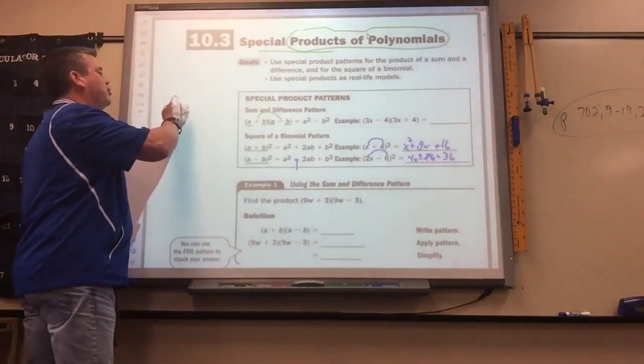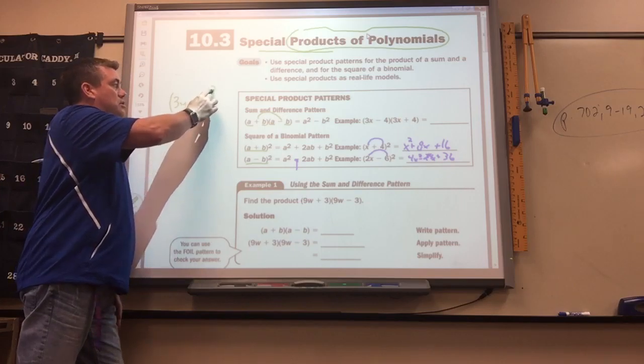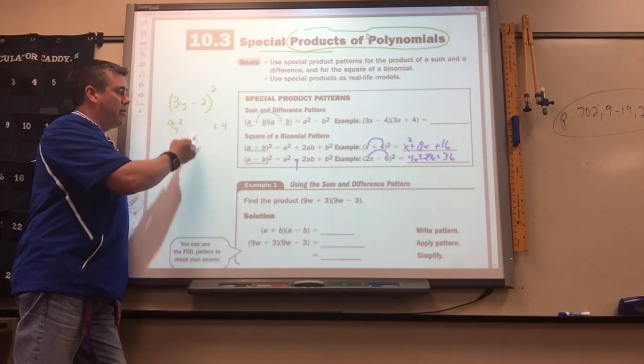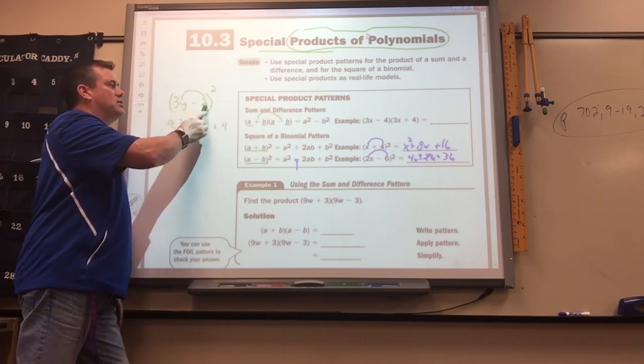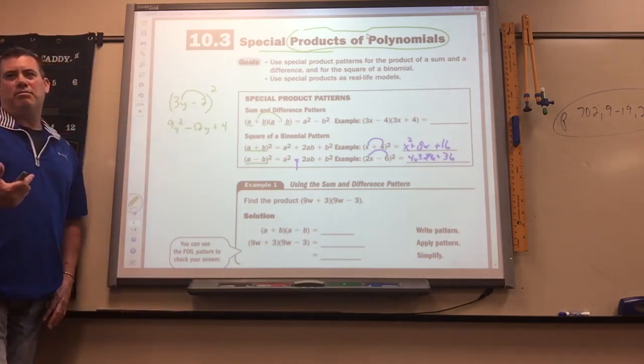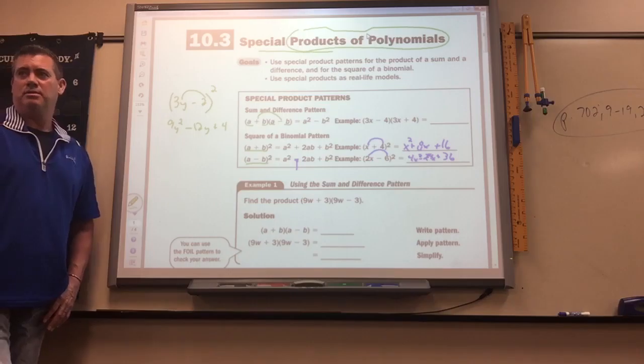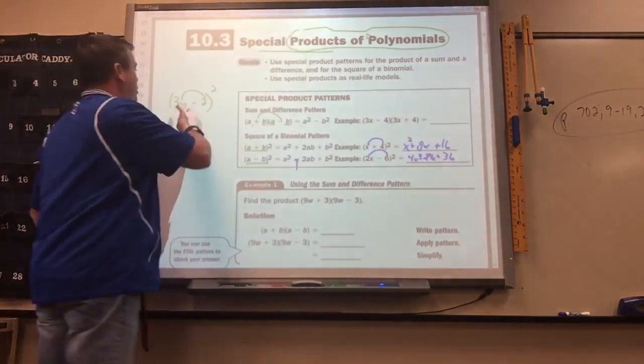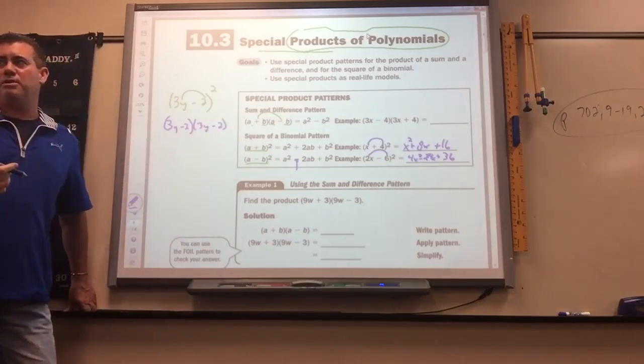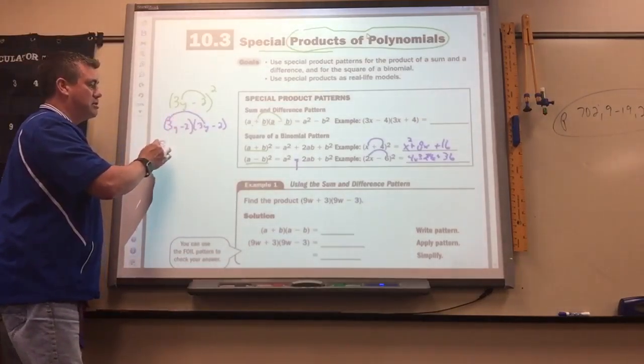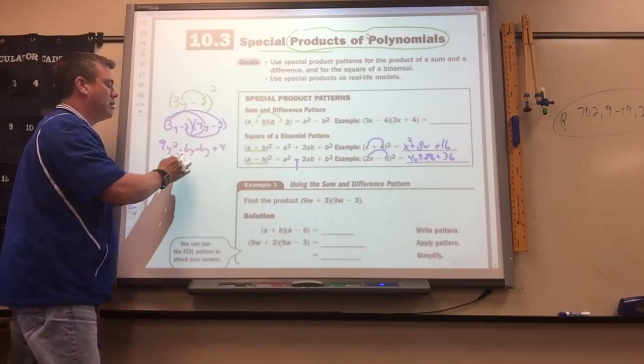So if you had 3y minus 2 squared, the shortcut is square this, you'd get 9y squared. Square that, you'd get plus 4, because 2 times 2 is 4. Then the middle term, since this is a minus, it's going to be a minus there. And then you just multiply these two together, 6y, and then double it. That's just kind of memorizing the pattern. It's not really teaching you how to do it, but I think everyone knows how to do it normally. 3y minus 2 squared means you take 3y minus 2 times 3y minus 2. So you can just do it the same way we have always been doing it if you don't remember this pattern.